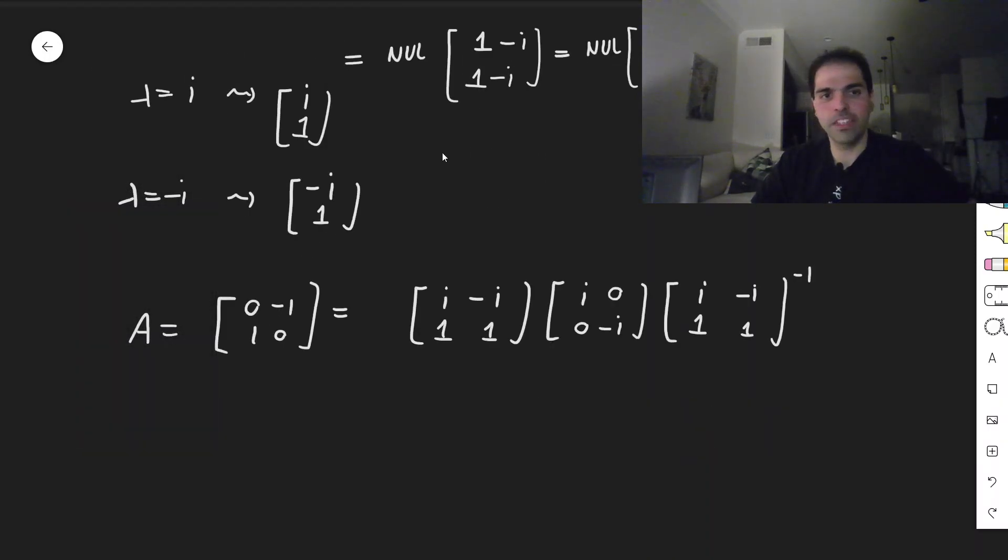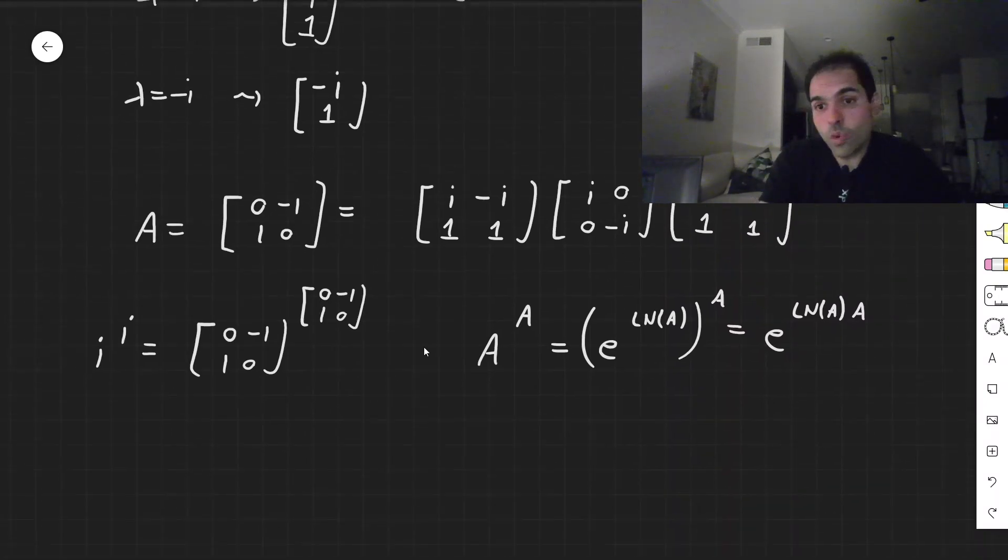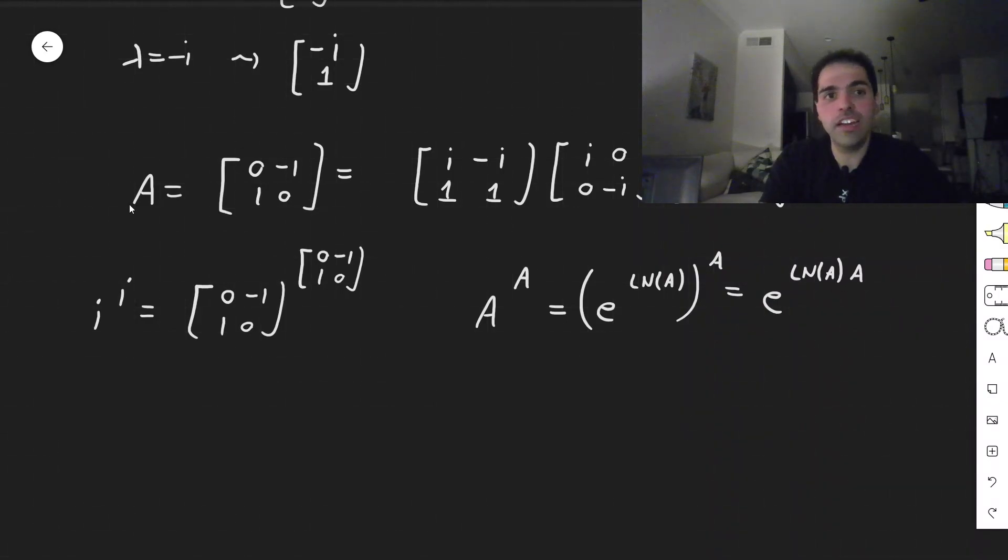And now the next step is what we would like to do. So i to the i, I would like to remind you, is 0 minus 1, 1, 0 to the 0 minus 1, 1, 0. And the question is, how can you calculate A to the power of A? Well, it's the same thing as E of ln of A to the power of A. And that is E to the ln of A times A, or A times ln of A. Those commute in this case. And so the first order of business is to calculate ln of A.